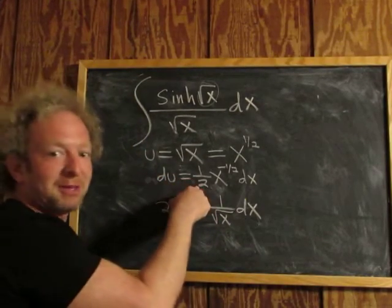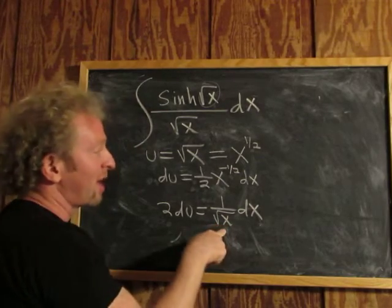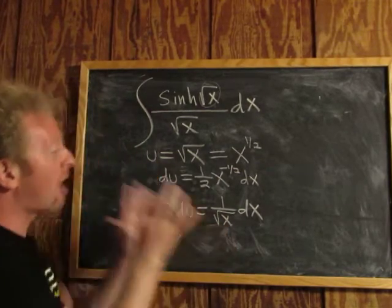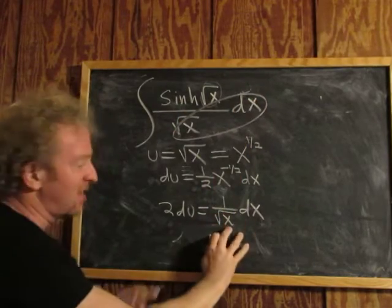So multiply by 2, it cancels. Bring this down, it becomes x to the one-half, and the x to the one-half turns into the square root of x. Now you have what you want, because this is right here, and it's equal to 2 du.